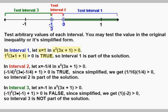Now checking Interval 2, which goes from 0 down to negative one third. We need a fraction between 0 and negative one third, so we pick x equals negative one fourth. Plugging into x squared times (3x plus 1) greater than 0: negative one fourth squared is positive one sixteenth, and 3 times negative one fourth is negative three fourths, plus 1 is positive one fourth. That's a positive times a positive, which is greater than 0 — true. So we shade the number line from negative one third to 0, leaving the critical values themselves unshaded.